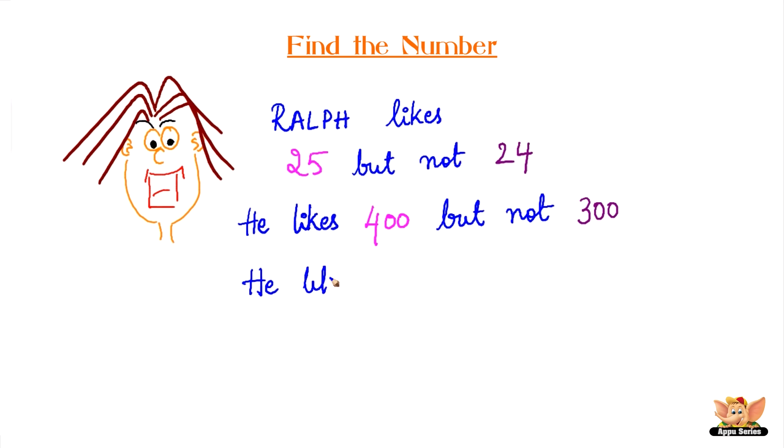By the Joneses, Ralph has a liking for certain numbers. Ralph likes 25 but not 24. He likes 400 but not 300, he likes 144 but not 145.